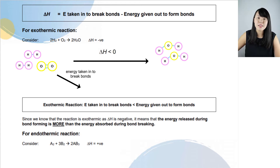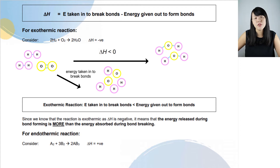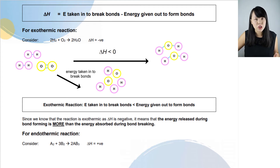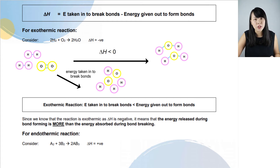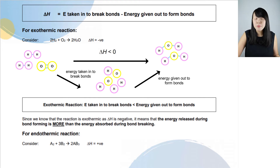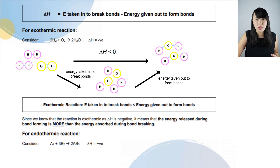Energy is taken in to break the bonds, resulting in the formation of individual hydrogen atoms and oxygen atoms. The reaction does not stop here — these atoms are very energetic and want to lose energy and form bonds to produce the water molecules. So energy is given out to form the bonds, resulting in the formation of the water molecules.